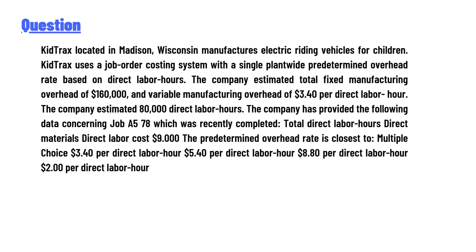The company has provided the following data concerning Job A578, which was recently completed: total direct labor hours, direct material, and direct labor cost $9.00. The predetermined overhead rate is closest to which of the following: $3.40 per direct labor hour, $5.40 per direct labor hour, $8.80 per direct labor hour, or $2.00 per direct labor hour?